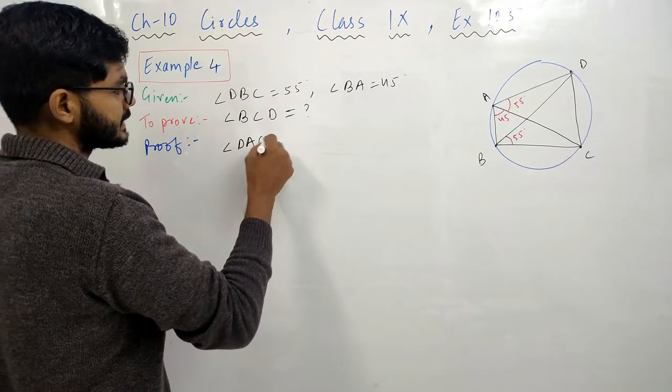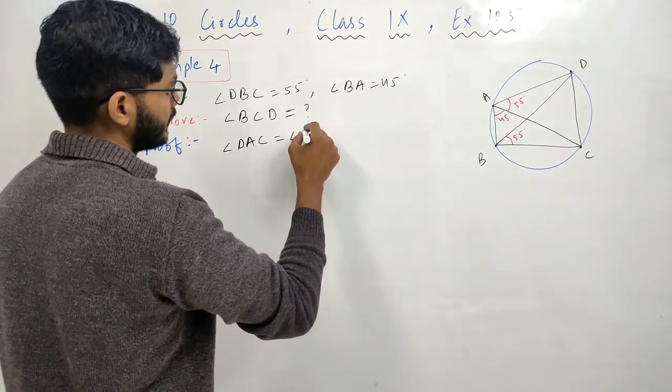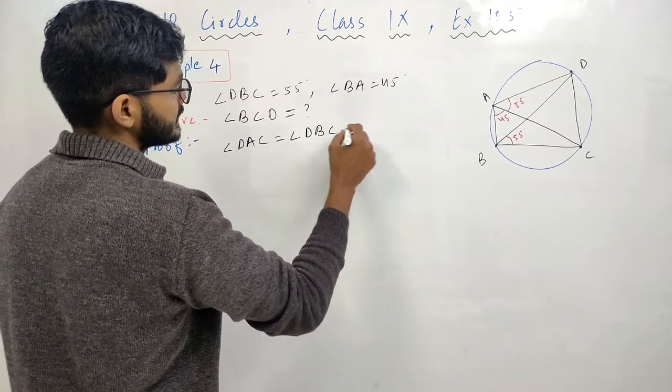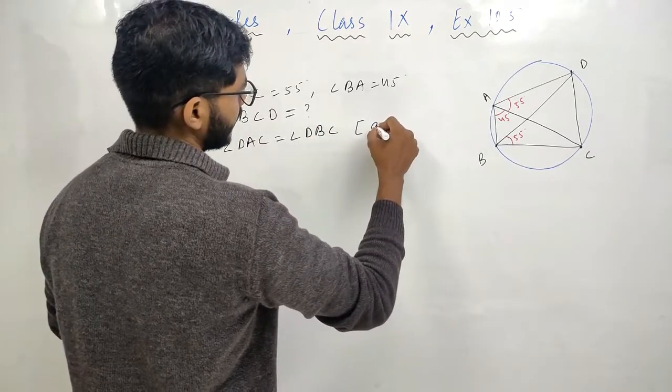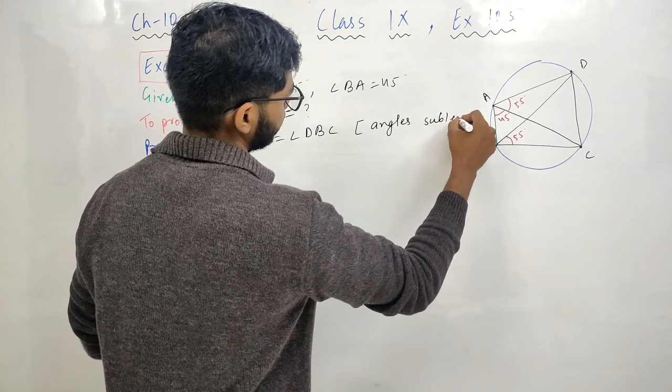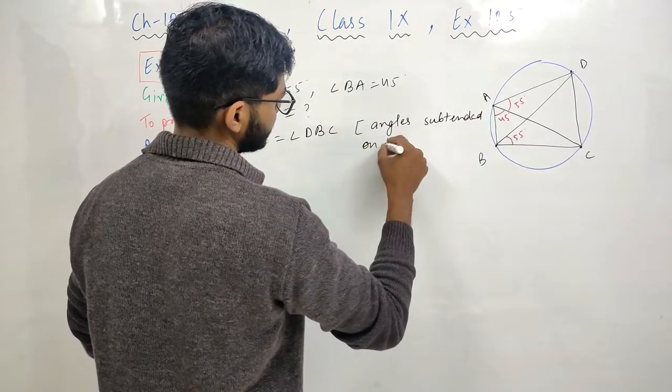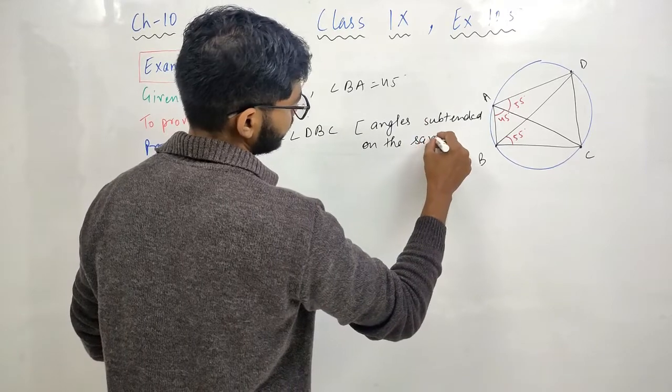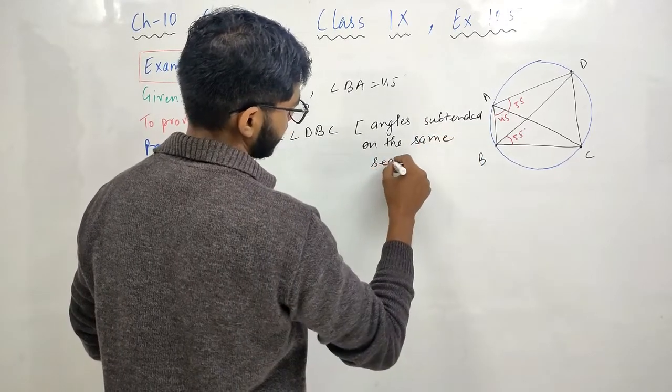Angle DAC equals to angle DBC. Reason क्या है? Angles subtended on the same segment.